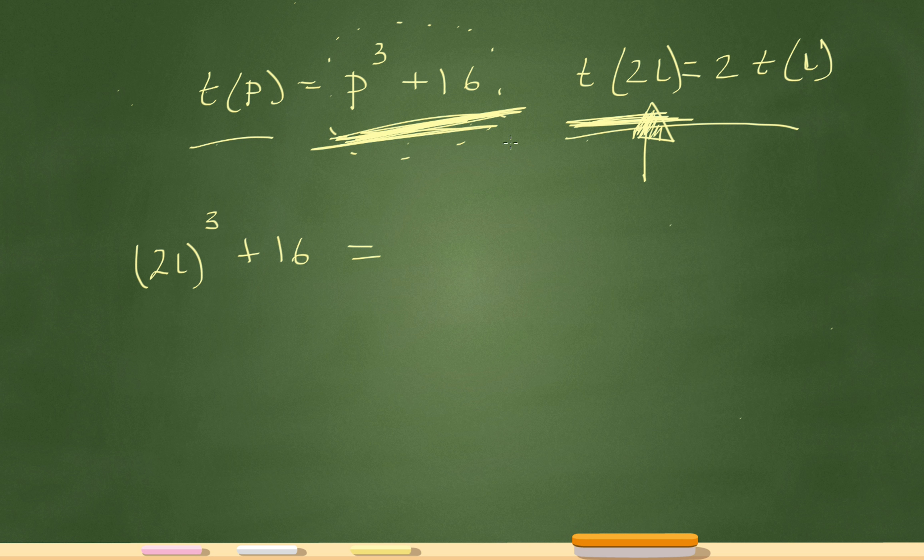And then I throw that equal sign there. So again, all I've done is that 2l, just replace that with a p. All that's saying is that in the function, this is a function right there, the value of p is 2l. Okay? So that's what I have here.